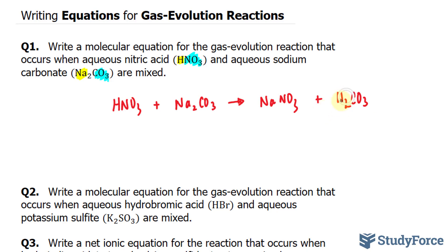Starting from the left side, we have HNO3 plus Na2CO3. This produces NaNO3, which doesn't change, plus H2O liquid and CO2 gas. This is where the reaction gets its name from.